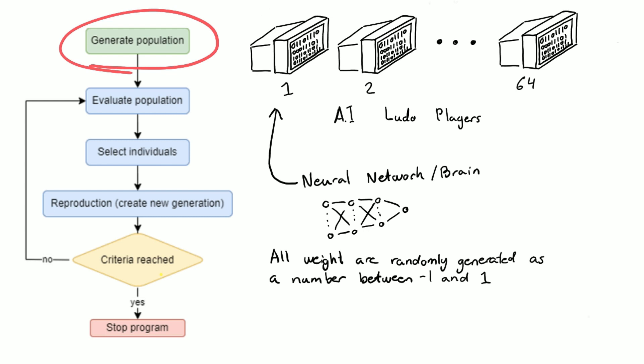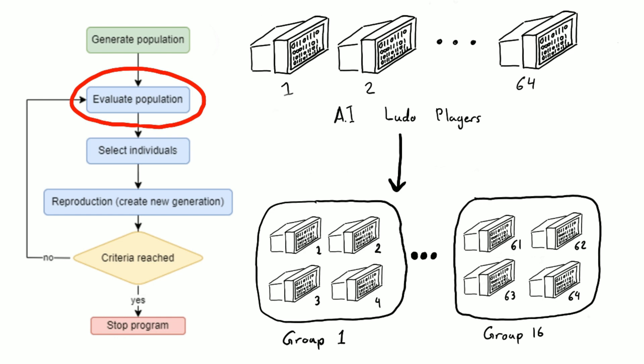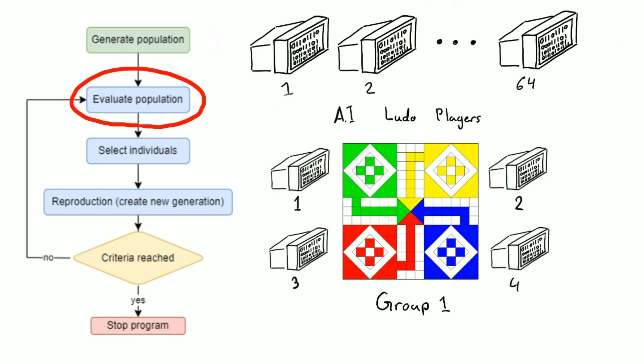I then put all of them in groups of four to play against each other and try to win as much as possible, with the idea being that the more they win, the better a chromosome they must have, the better genes they must have. The reason for putting them in groups of four is that if I just have them play against opponents that play randomly, I imagine we would see a ceiling to what they're capable of doing.